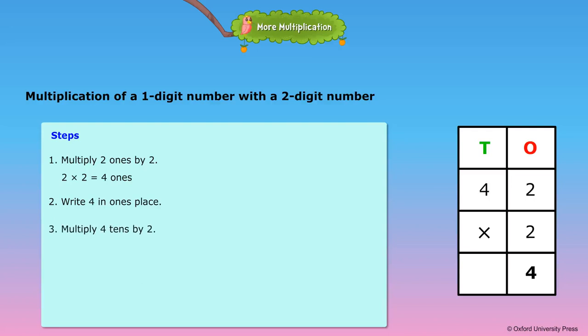3. Multiply four tens by two. 2 into 4 is equal to eight tens. 4. Write eight in the tens place.